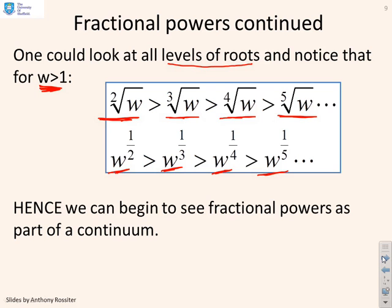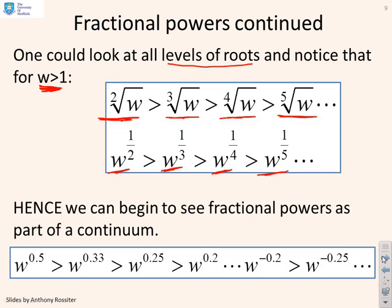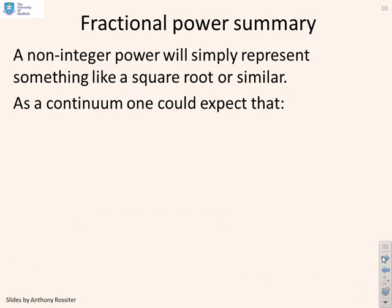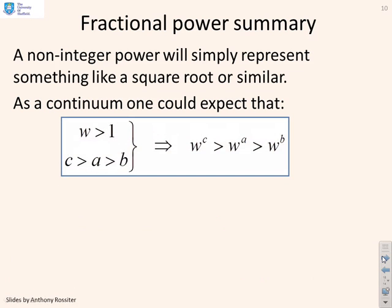And what you can see here is we're beginning to get close to a continuum. Here, we had w to the half and then we had w to the 0.33 and then w to the 0.25 and then w to the 0.2 and I could have gone on and tried w to the minus 0.2 which obviously puts the w in the denominator, w to the minus 0.25 and so on. And you see these numbers, these powers are beginning to look a bit like a continuum and it's not hard to imagine that I could stick a value in here, something like w to the 0.22 and it has a sensible meaning.